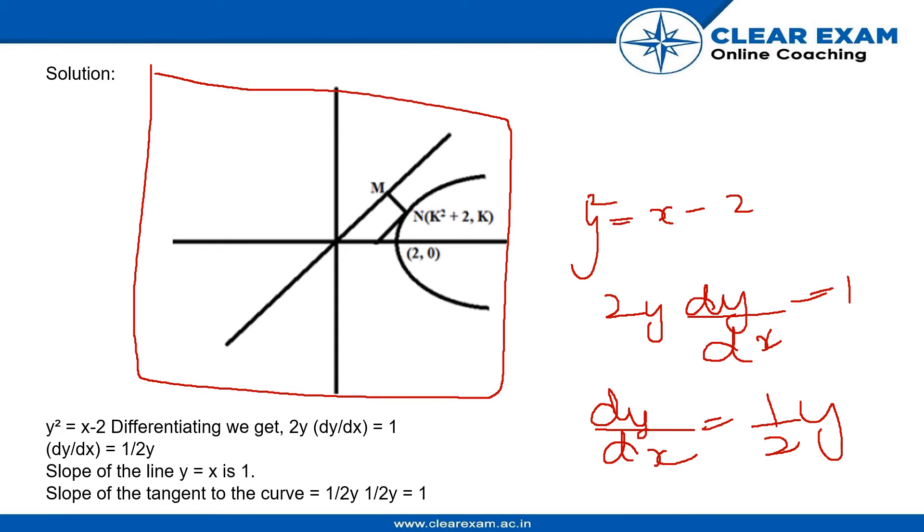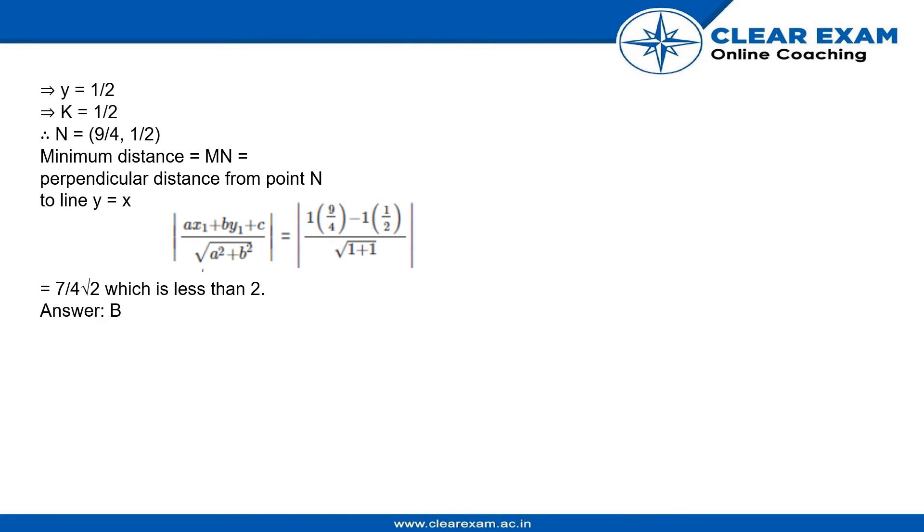Slope of the line y equal to x is 1 and slope of the tangent to the curve is 1 by 2y into y, which is equal to 1. Therefore, y will become 1 by 2, k will become 1 by 2, and hence n will be 9 by 4, 1 by 2.